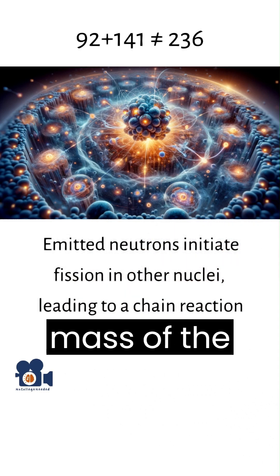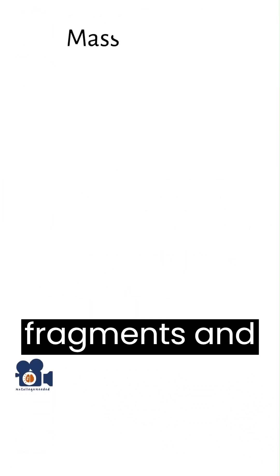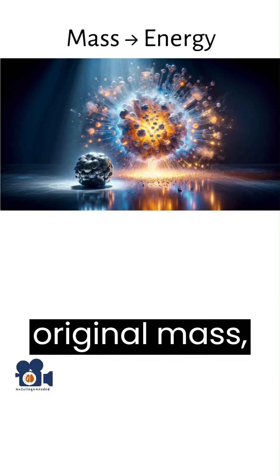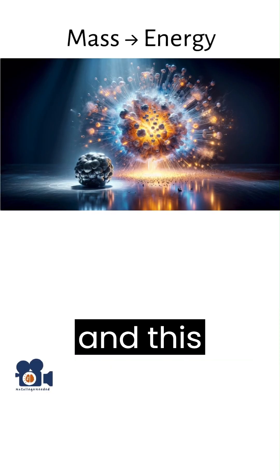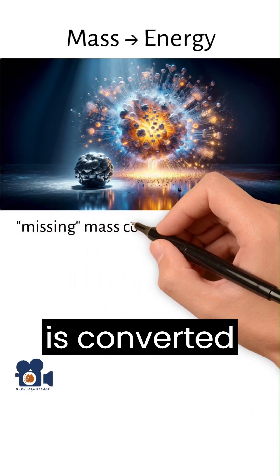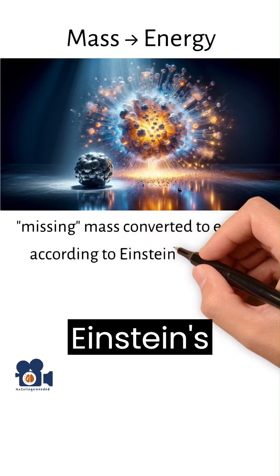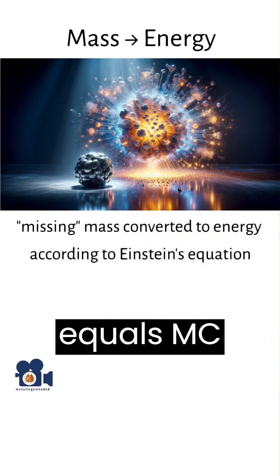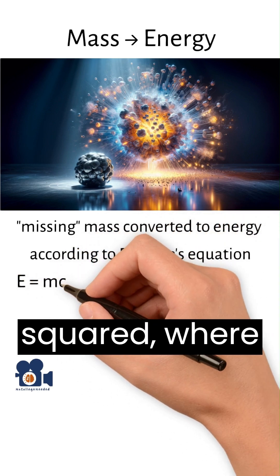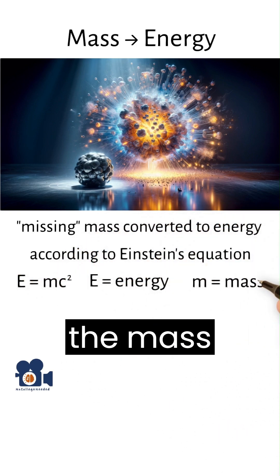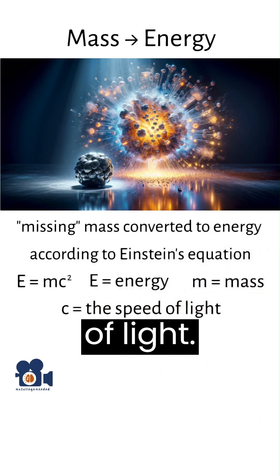The mass of the fission fragments and neutrons is slightly less than the original mass, and this missing mass is converted into energy according to Einstein's equation E equals MC squared, where E is the energy, M is the mass difference, and C is the speed of light.